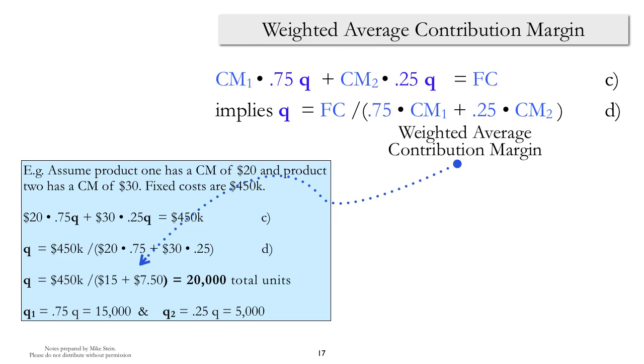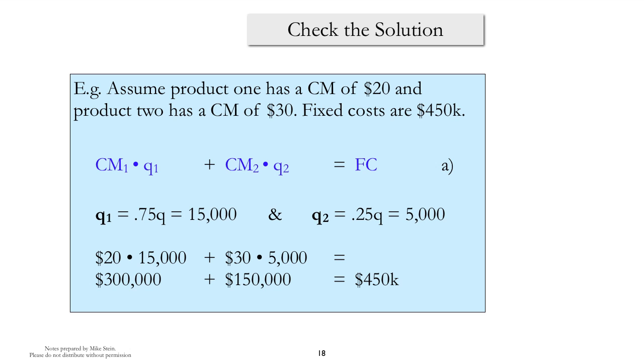Just to be sure, let's check the numbers. So once again, we'll go back to the break-even equation. We'll substitute in all the values that we know and see what happens. It looks like product 1, of which we're going to sell 15,000 units, will contribute $300,000 in contribution margin, while product 2 will contribute $150,000 in contribution margin. When we sum them up, it's equal to $450,000, which is the fixed cost that we were trying to cover.